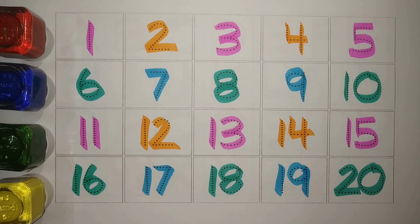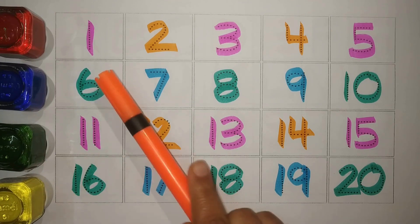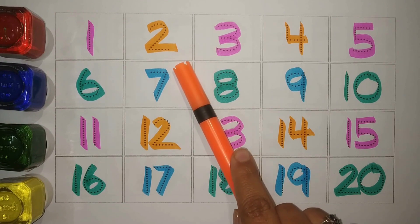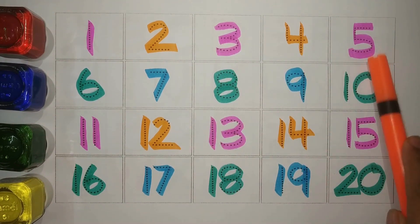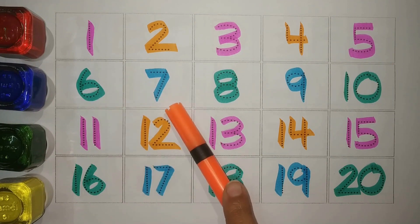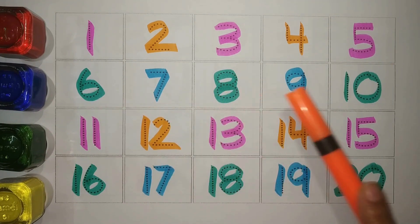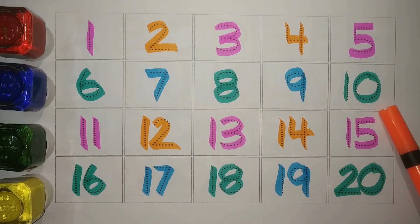Let's revise. Chalo phir se karte hai. 1, Pink 2, Orange 3, Pink 4, Orange 5, Pink 6, Green 7, Blue 8, Green 9, Blue 10, 10.